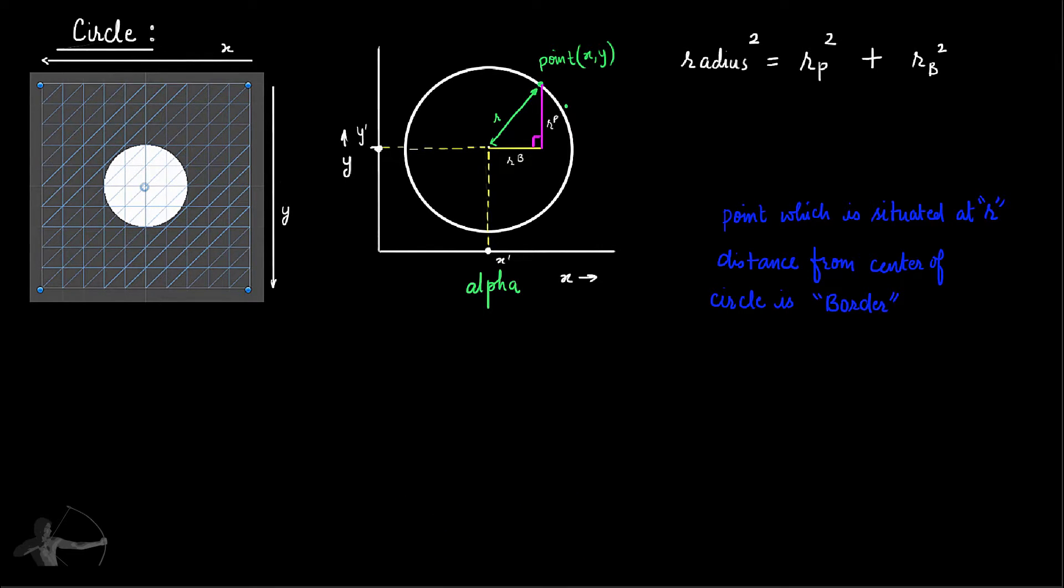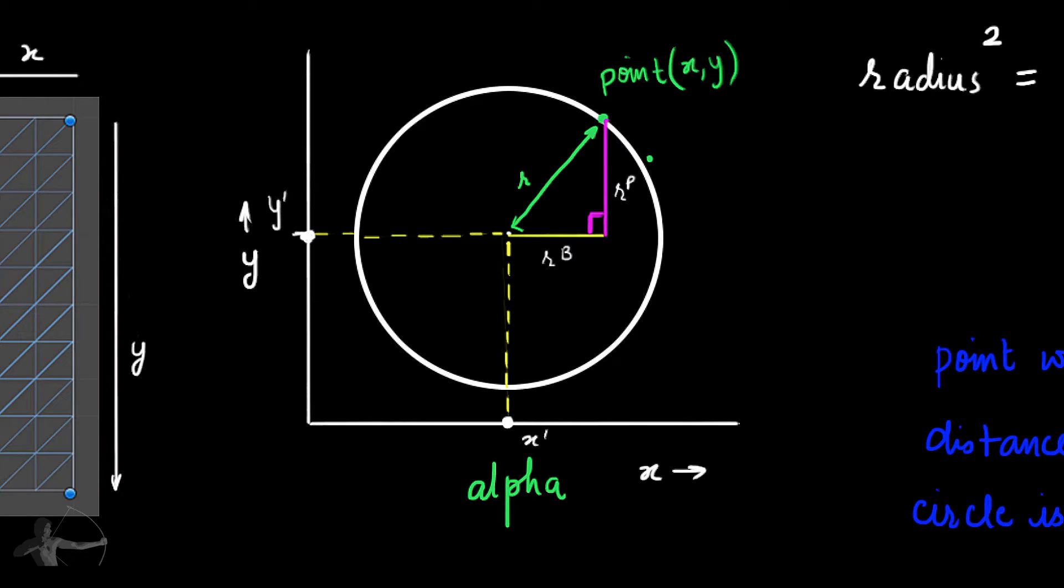To understand R_P, let's mark the beginning and ending point of the line. This pink line ends at Y double dash and it starts at Y dash. Similarly R_B starts at X dash and it ends at X double dash.